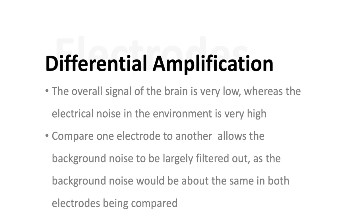Differential amplification is a process where we compare one electrode to another. All EEG interpretation relies upon this principle. Why is this? It's because the overall electrical potential being measured at a given point in the brain is extremely low compared to the electrical noise in the environment. By comparing one electrode to another, we can essentially filter out the background noise as the background noise is about the same in both the electrodes being compared. So what we are left with is the part that's different between the two electrodes.